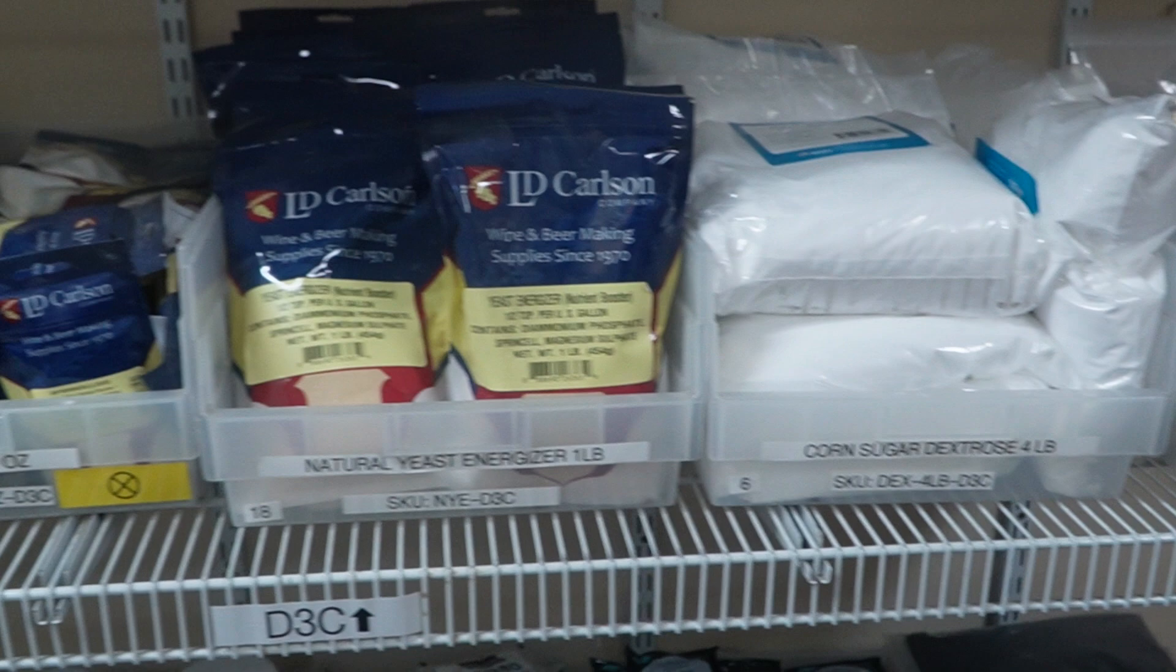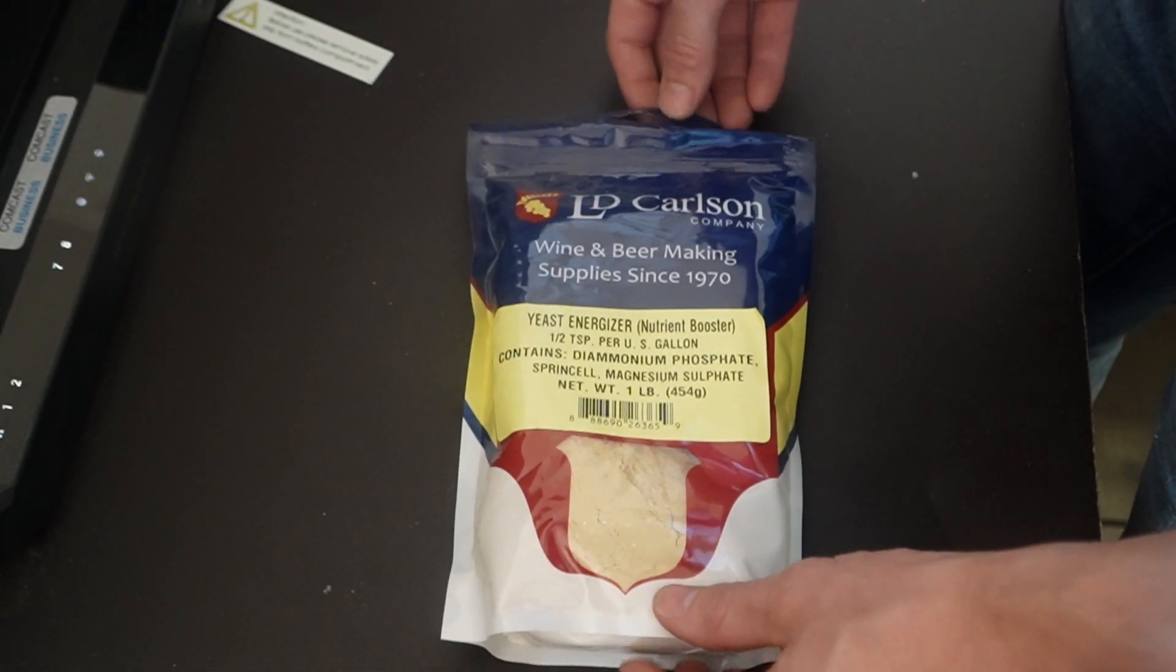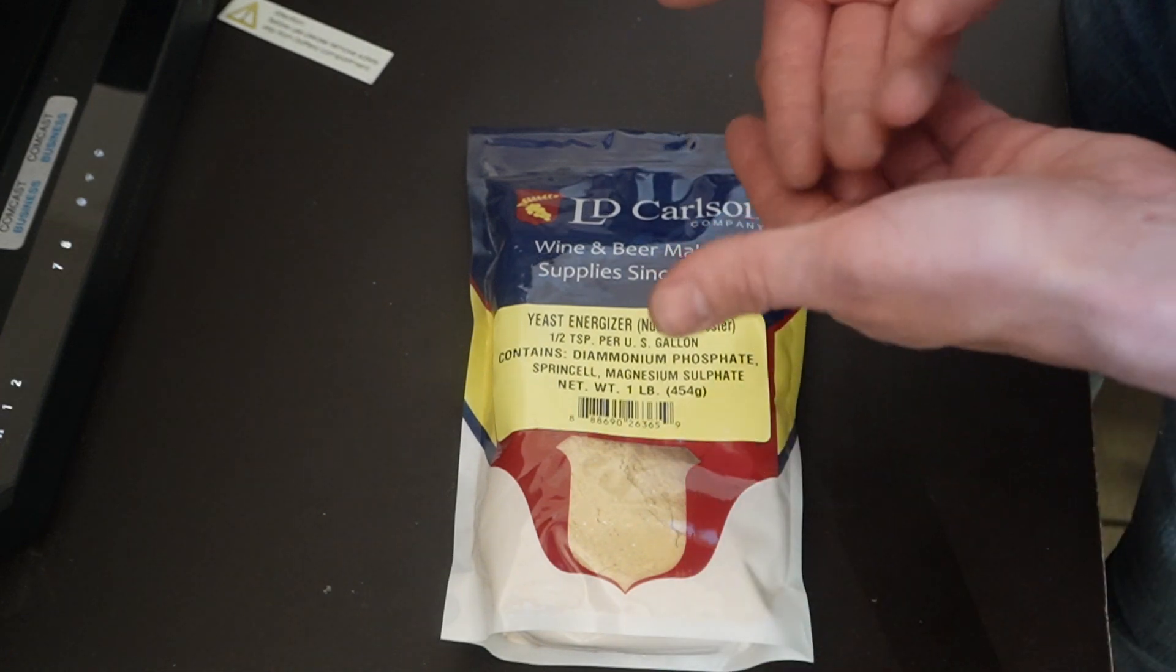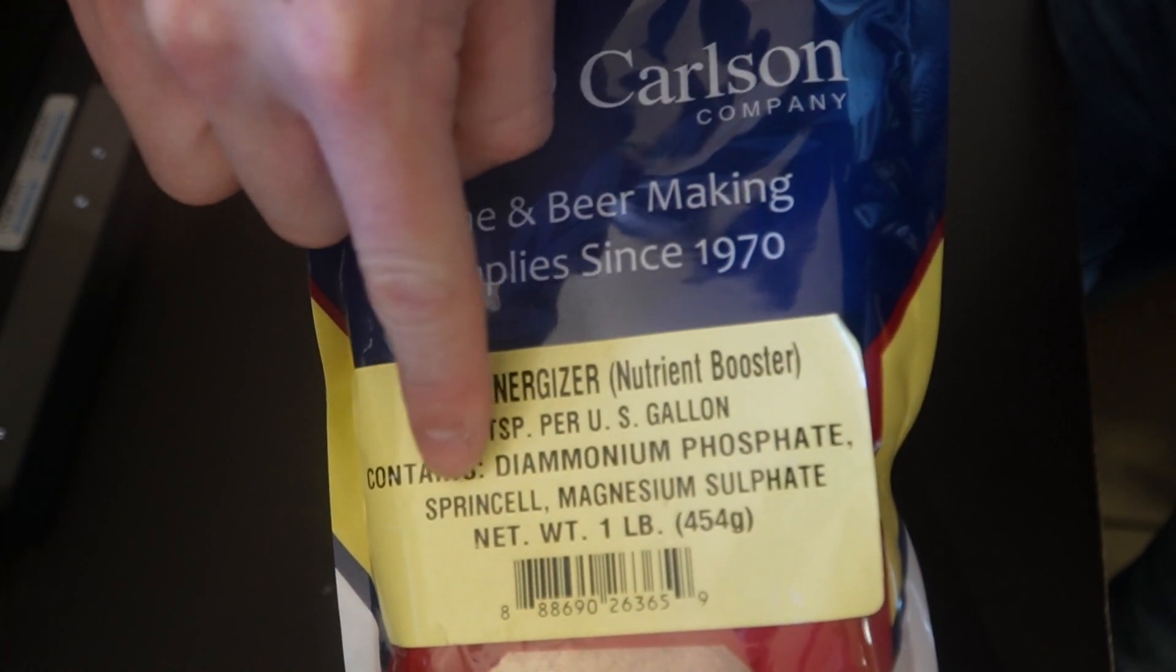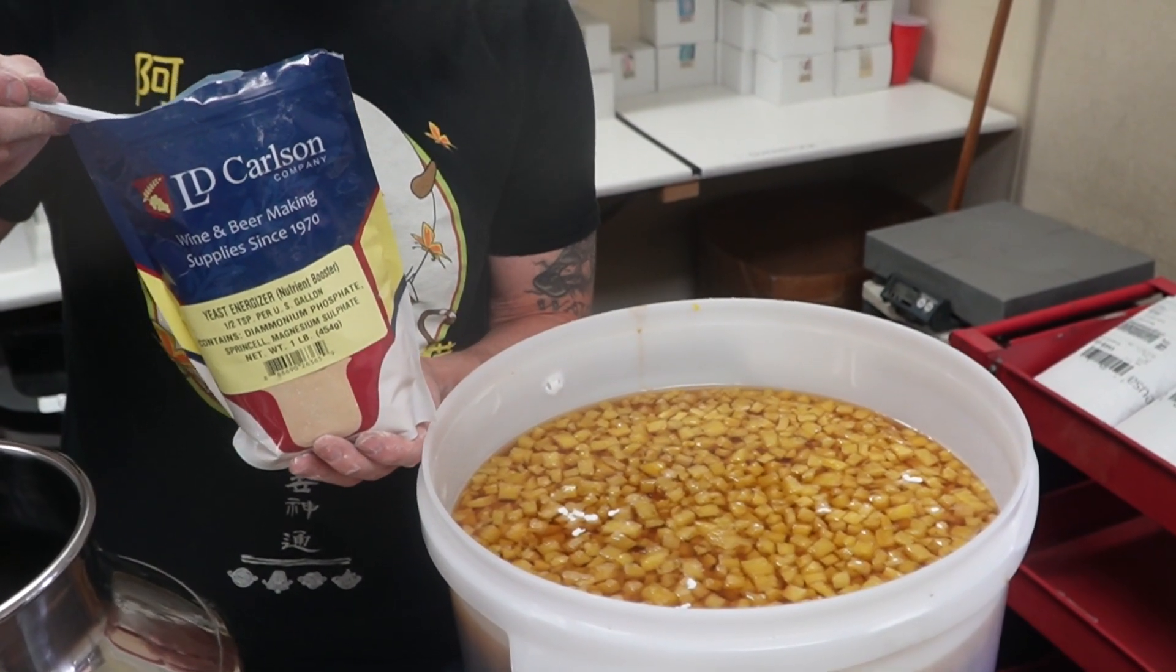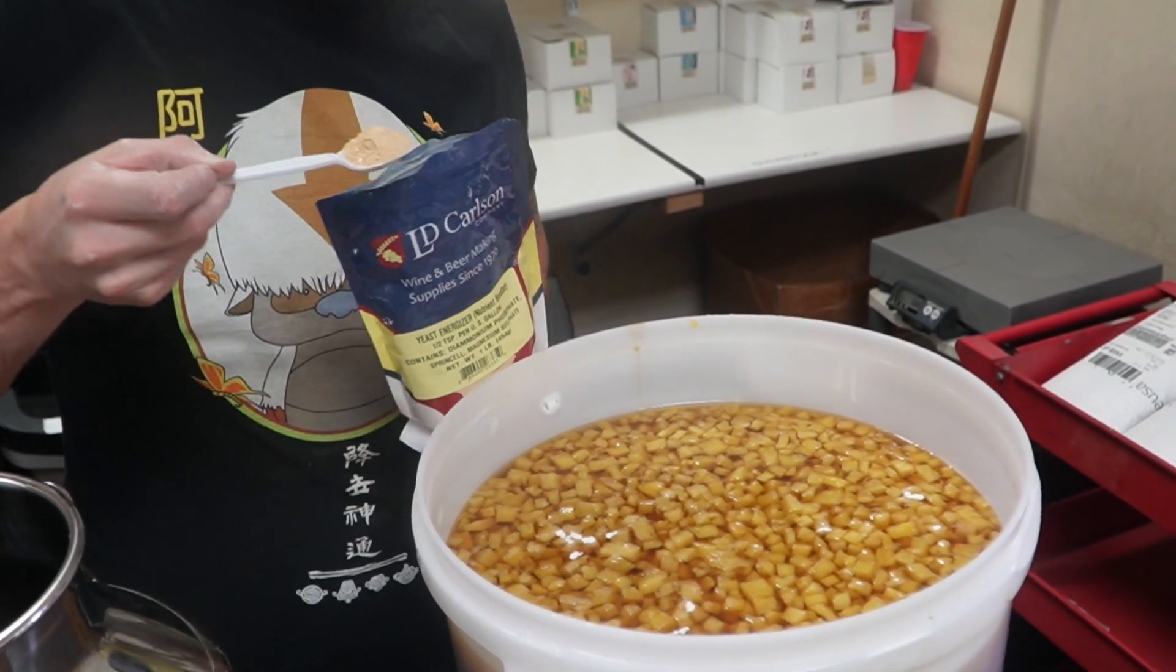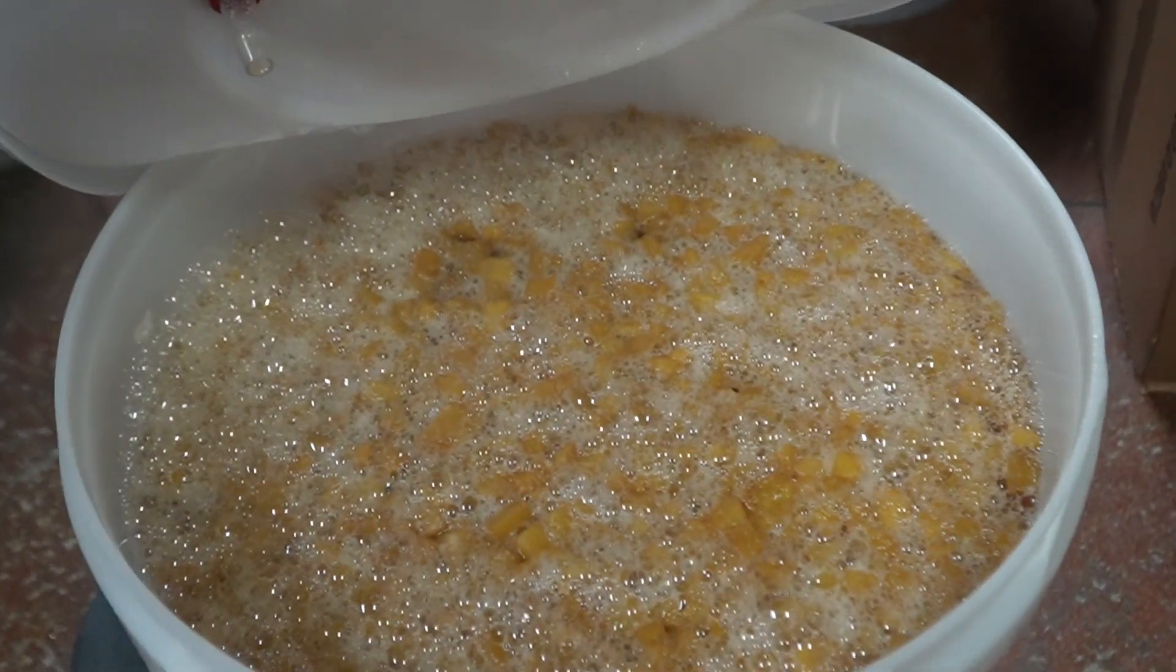Let's start it off with Yeast Energizer. This holds one simple purpose and that's for energizing stuck fermentations. Consisting of a blend of Diammonium Sulfate, Spent Cell and Magnesium Sulfate, if your fermentation is not fully fermented and won't start again, adding about a tablespoon of this will get it perked right back up. Highly recommend this for stuck washes.